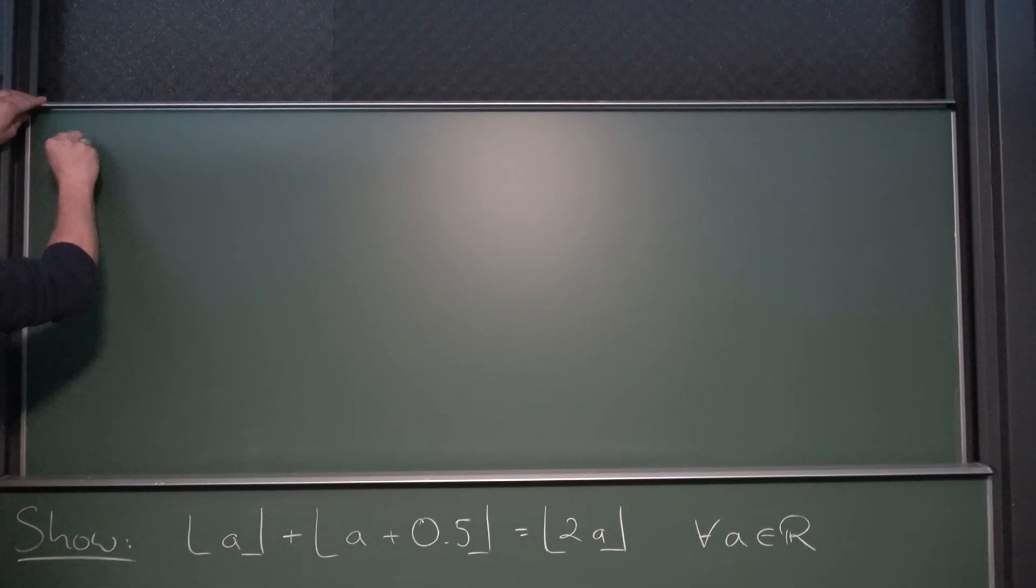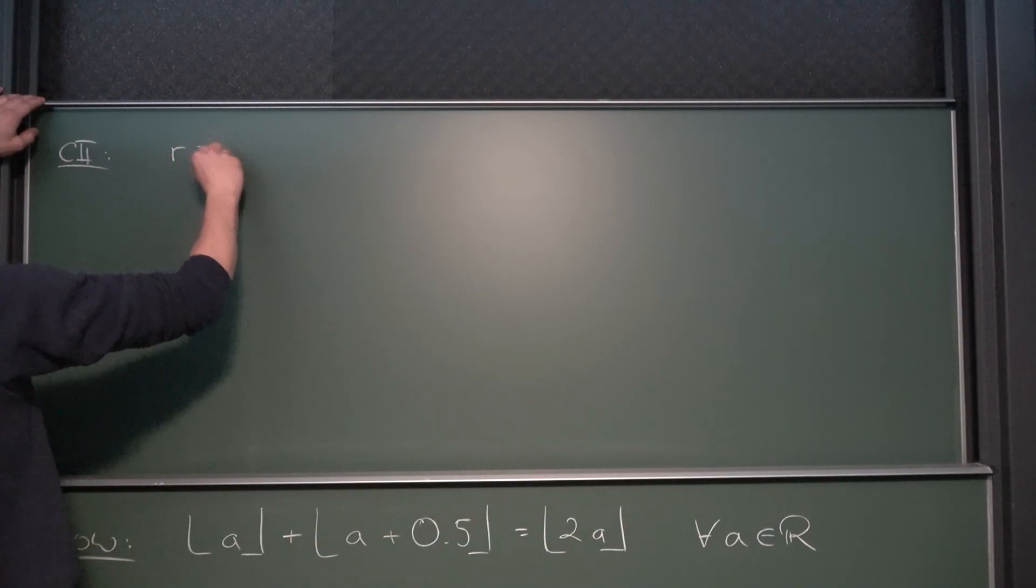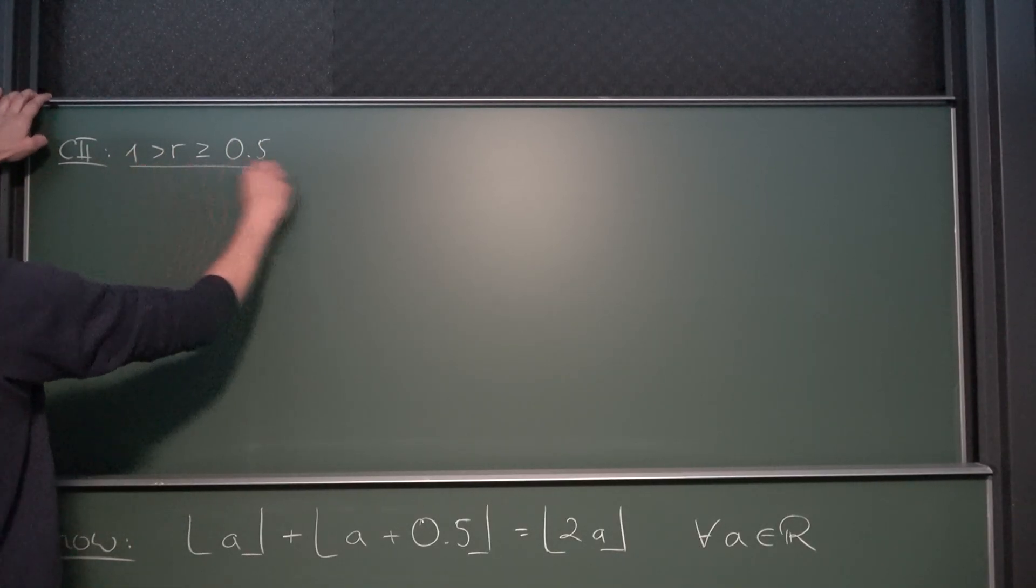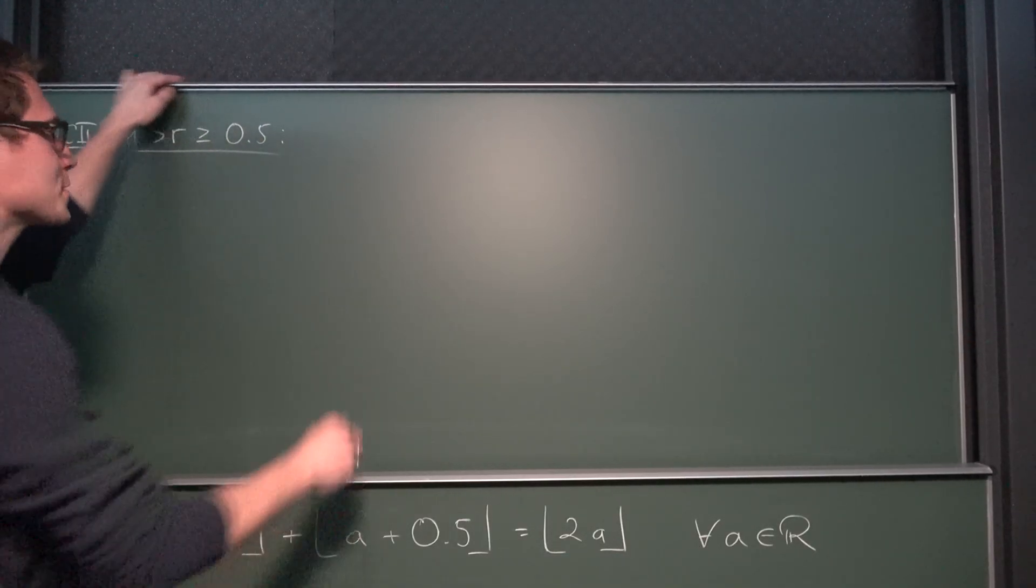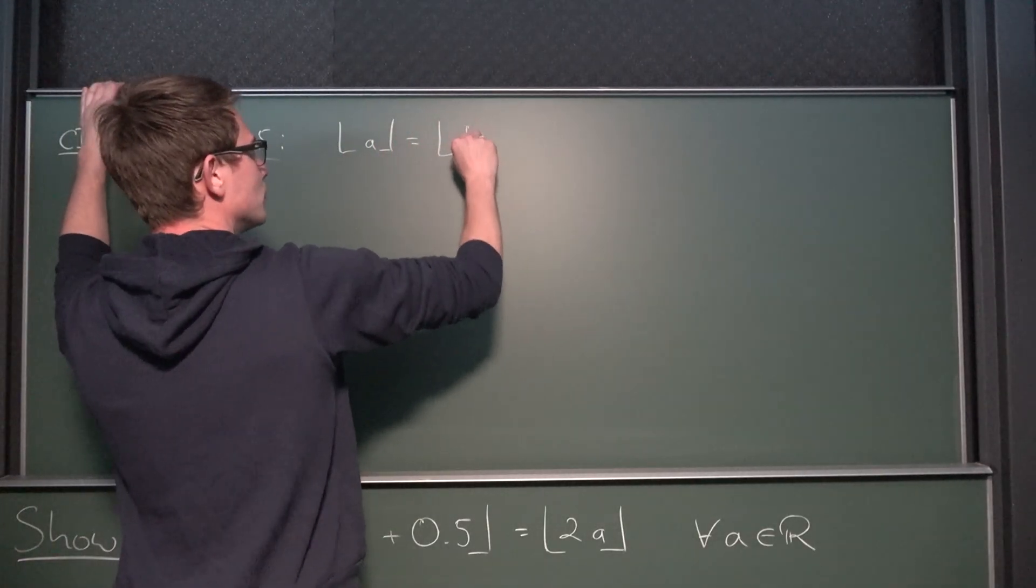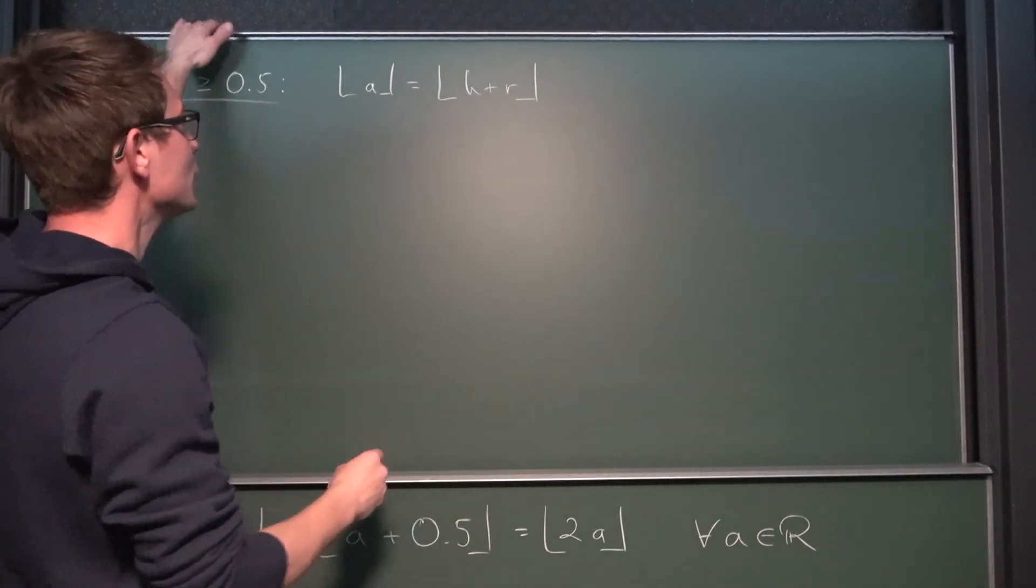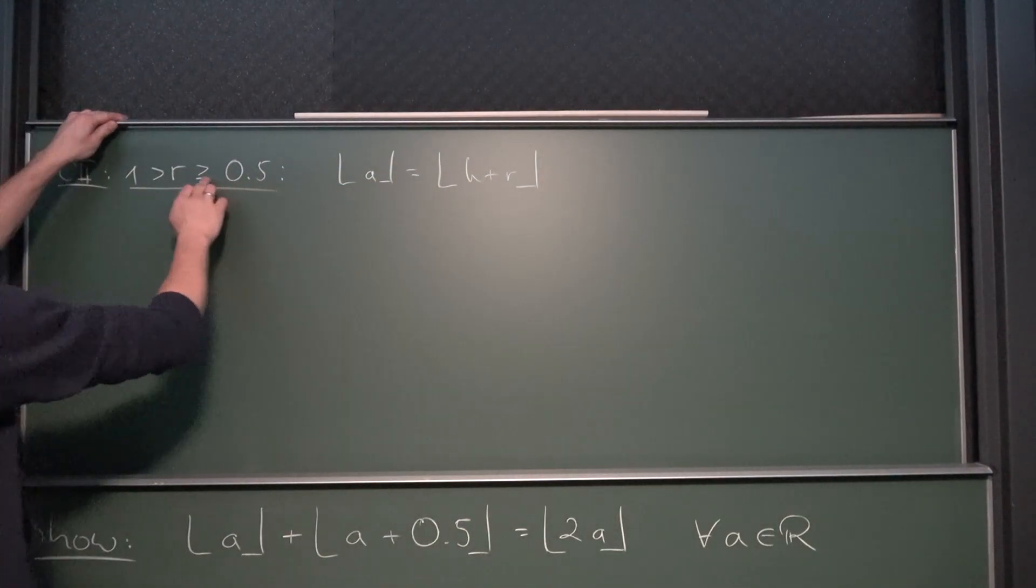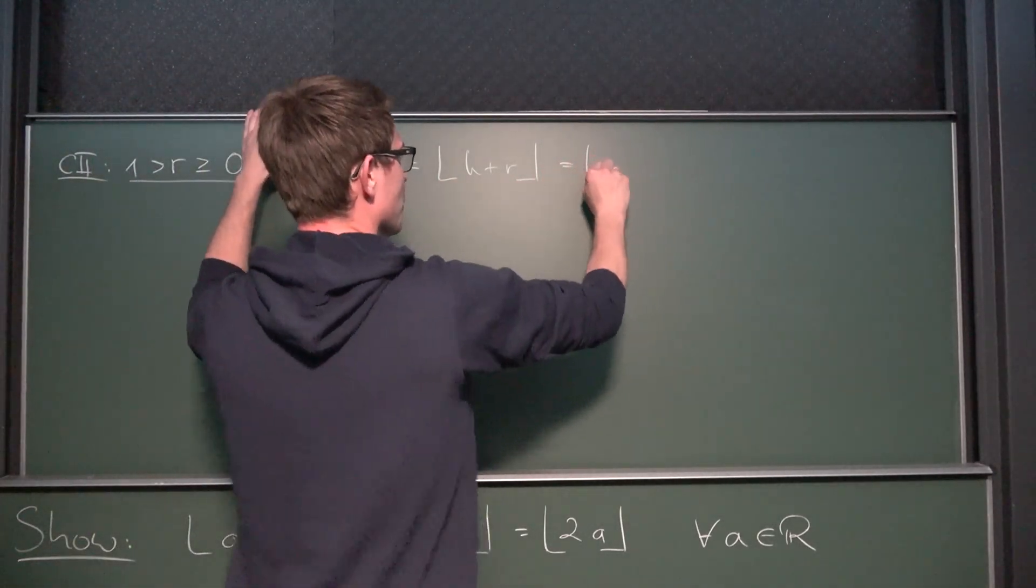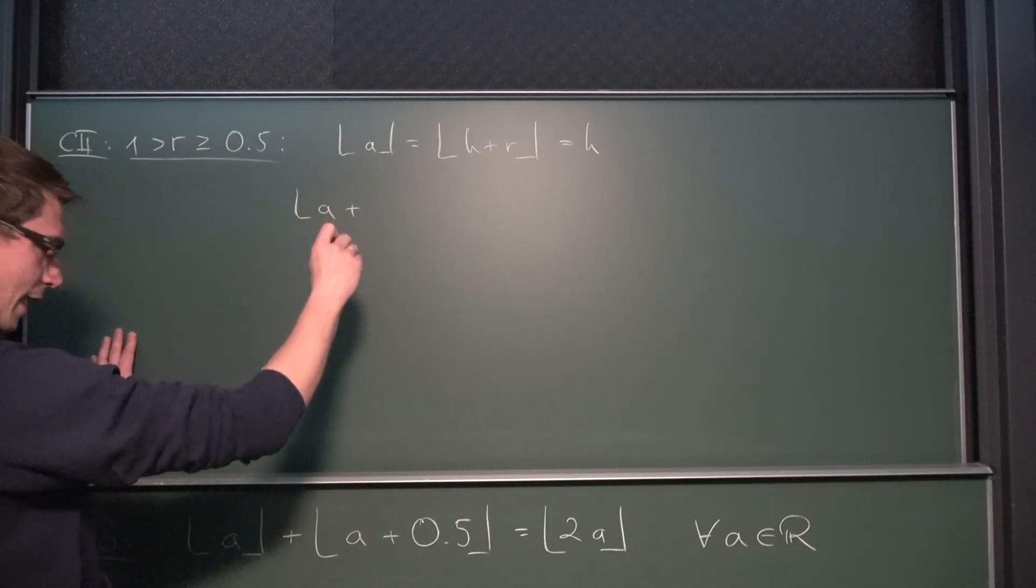Case number 2. We are going to have r being greater or equal to 0.5 but once again less than 1. Now if you have that situation, what is going to happen to the floor of A? Once again, this is the floor of k plus r. And if we have the floor of k plus r, then since r is greater than 0.5 but still less than 1, we would round down to k nonetheless.